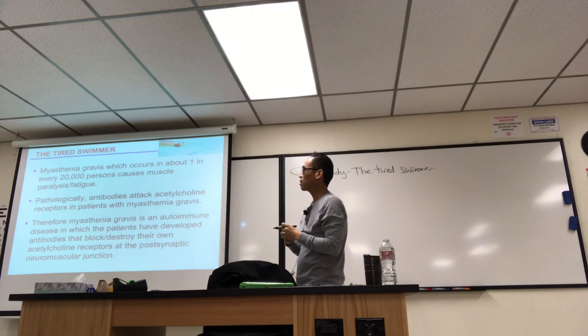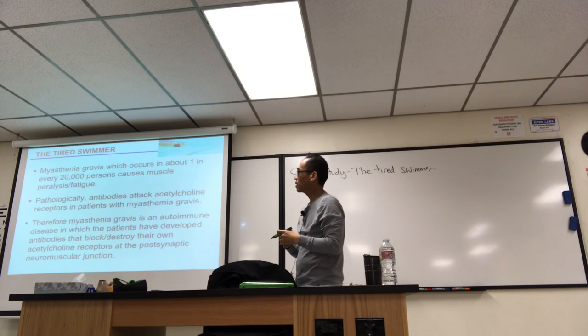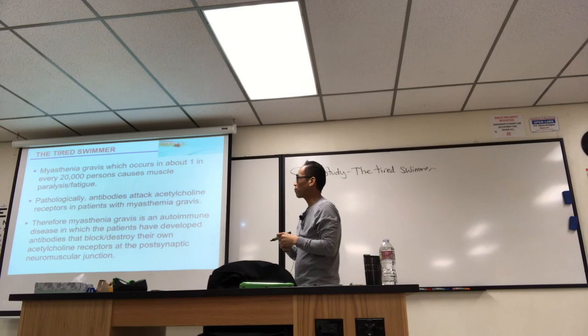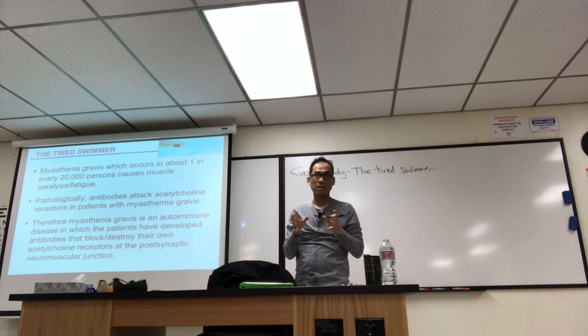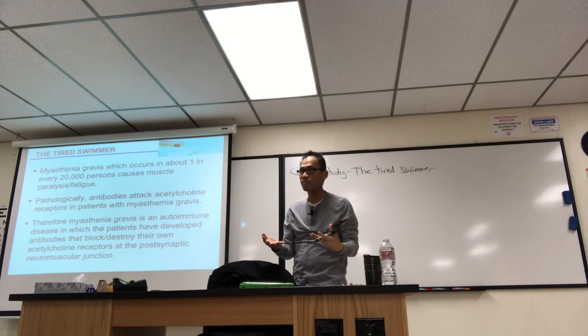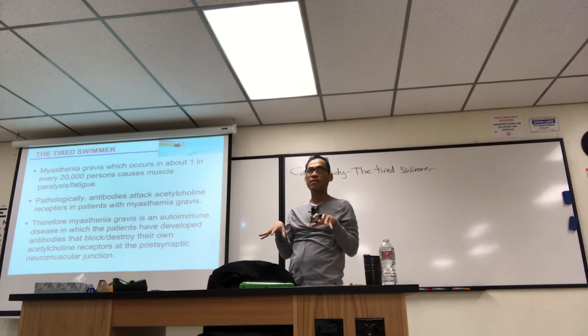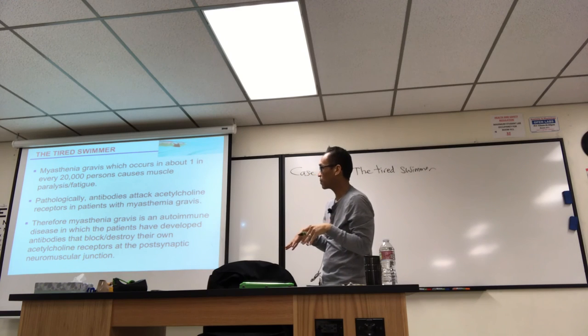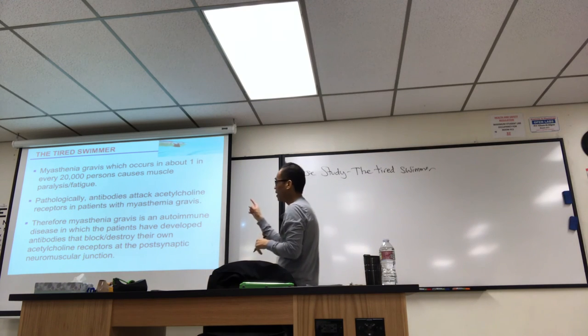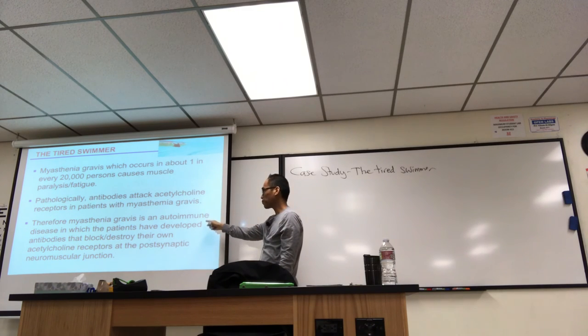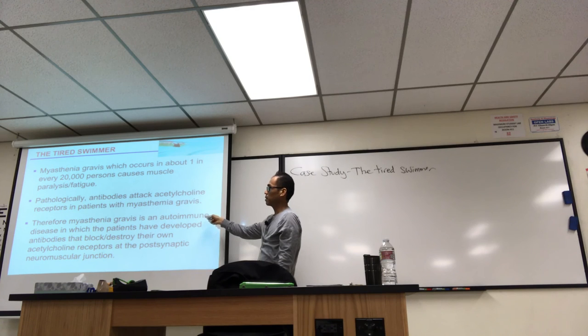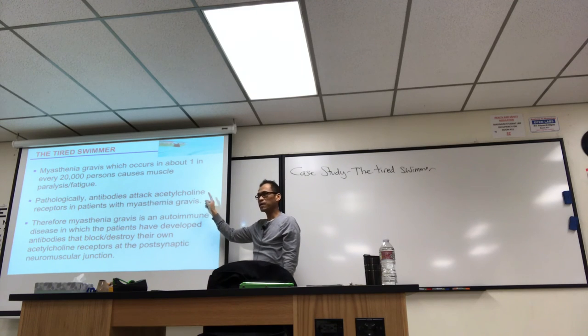The case study reflects my personal experience with this student. It causes muscle paralysis and fatigue. It could be life-threatening if the muscle paralysis affects, for example, your diaphragm. If it doesn't threaten the diaphragm function then it shouldn't be life-threatening, but still needs to be treated. What's happening is antibodies attack acetylcholine receptors in these patients. This is an autoimmune disease, right? Because your antibodies shouldn't attack your own molecules.